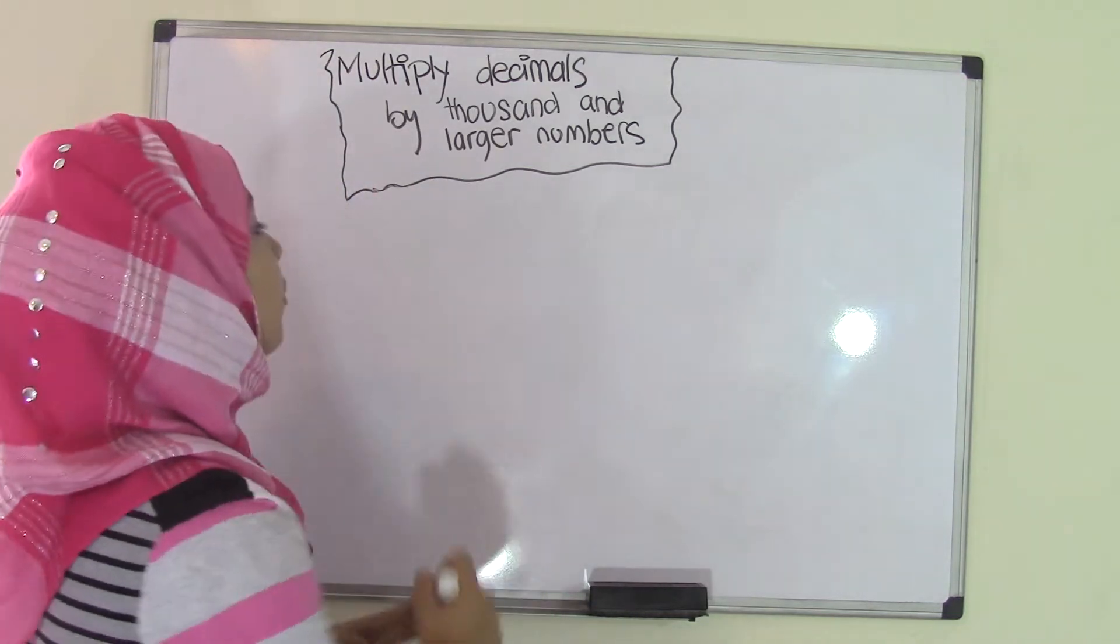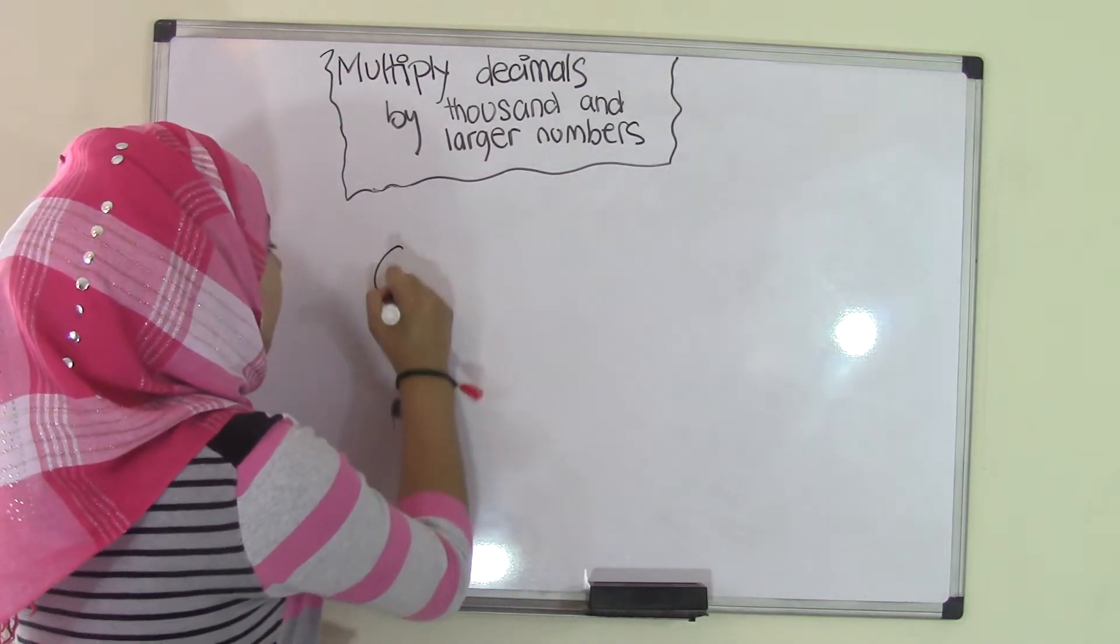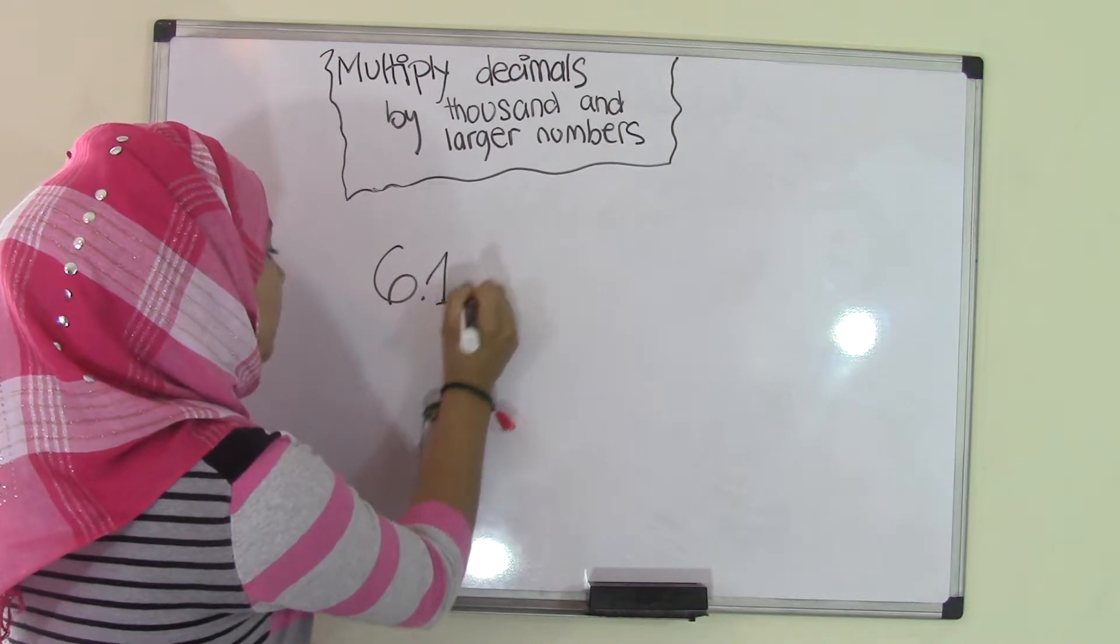So, our first example will be 6.1 times 1,000.